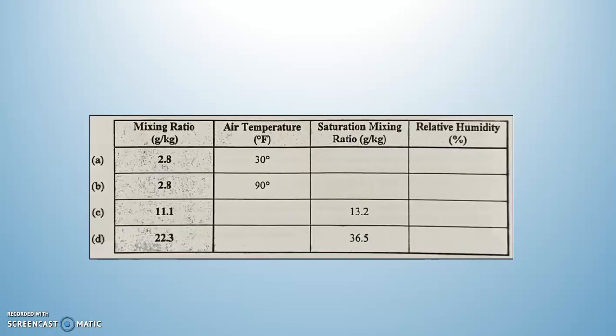Now we're going to apply this to the table. Across the top we have mixing ratio, temperature in Fahrenheit, saturation mixing ratio, and relative humidity. I'm going to do A and C with you right now; you will do B and D on your own. Let's start with A. Notice what you are given: a mixing ratio of 2.8 and an air temperature of 30 degrees. Remember, air temperature corresponds to saturation mixing ratio. If you get the saturation mixing ratio, you take the 2.8, divide by the SMR, and that gives you relative humidity.